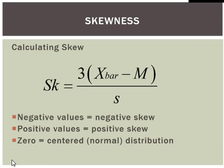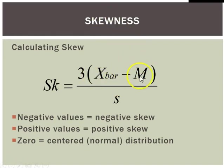You should be able to tell something about skew just by looking at the distribution, but you can also actually calculate it. Just by comparing the mean x-bar and the median values we can say something about how skewed our data is. The formula to calculate skewness is to take the difference between the mean and the median, multiply it by 3 — exaggerating it a little — and then divide it by the standard deviation of the whole data set. This gives a skewness value where negative values indicate negative skew, positive values indicate positive skew, and values near zero indicate no skew, which is indicative of a normal distribution.